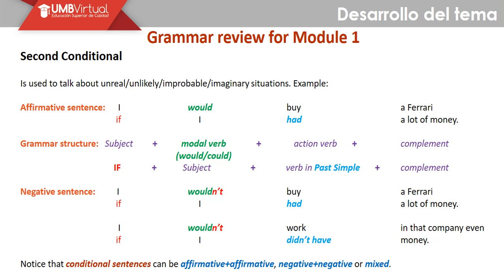Affirmative sentences — cuando utilizamos oraciones afirmativas, vamos a hacer uso del siguiente orden. Recordemos que podemos cambiar el orden de la condición y la consecuencia. Podemos empezar con el 'if' seguido del verbo en pasado simple, y la parte de la consecuencia con 'would' y el verbo en presente. For example: 'If I had a lot of money, I would buy a Ferrari.' Si yo tuviera mucho dinero, yo compraría un Ferrari. Or: 'I would buy a Ferrari if I had a lot of money.' Recordemos que 'would' da una connotación de condicional al verbo que le sigue — yo compraría, yo iría, yo trabajaría, estudiaría, etc.